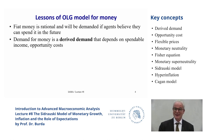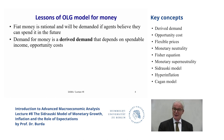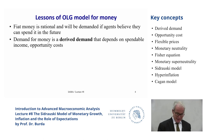Opportunity costs are what you're foregoing to do something. If you stay in bed today, you're forgoing working or studying. The best alternative to having cash is to put it in an interest-bearing asset. Interest rates are rising but still low, so right now we don't care about it very much. But if they're 20% or 30%, or if the opportunity cost of holding money is the rate of inflation — say 50% per month in a hyperinflation — then you really want to keep your cash balances as low as possible.